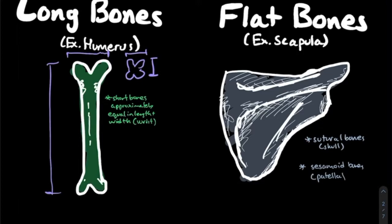Next we have flat bones, which as the name suggests are flat — very long on the side. An example is your scapula, or shoulder blade, informally called wing bones. These glide over the back of your ribs and assist with creating a pocket for your humerus to slot into, providing stability for that ball and socket joint.